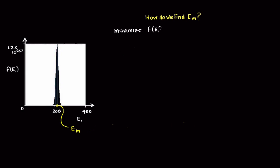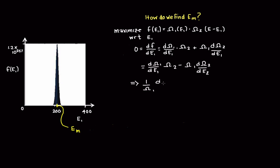To find Em, we want to maximize the function F with respect to E1. Since the volume, number, and total energy of the system are fixed, differentiate F with respect to E1. The maximum occurs when this derivative is zero. Take a moment to carry out this derivative and check your solution with ours.